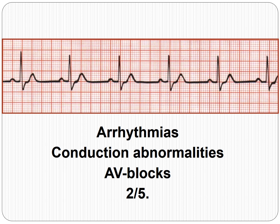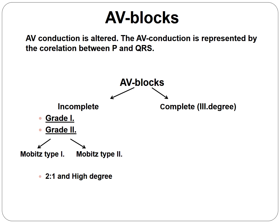The best way to understand conduction abnormalities is to evaluate the conduction between the atrium and the ventricle. We will start with AV blocks, where the conduction is altered and the correlation between the P wave and the QRS is altered. AV blocks can be differentiated into incomplete or complete block — the complete one is 3rd degree, and the incomplete includes 1st degree, 2nd degree Mobitz Type 1, Mobitz Type 2, 2:1, and high degree blocks.